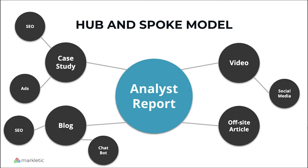This is what the hub and spoke model would look like visually. You have the hub content — your key gated content such as an analyst report — and then you have your spoke content, such as case studies, blogs, videos, and an off-site article. These pieces of spoke content will have a promotional strategy; you can promote spoke content through ads, SEO, and chatbots, for example. When people enjoy your spoke content and click through to your hub content, the traffic arriving will be more qualified, which means your conversion rate will also improve, and your sales team will be following up on warmer leads.